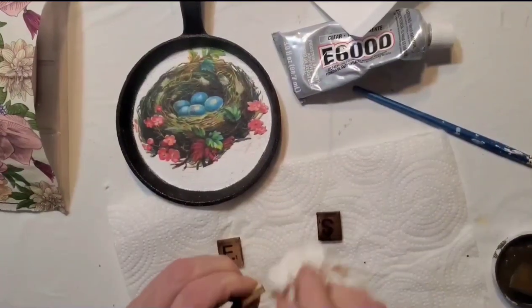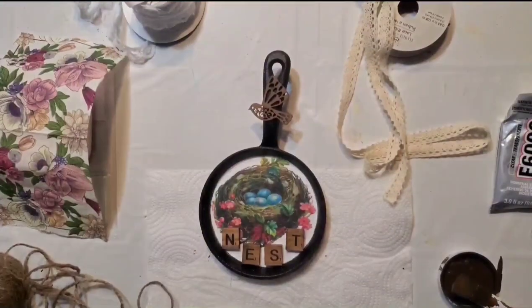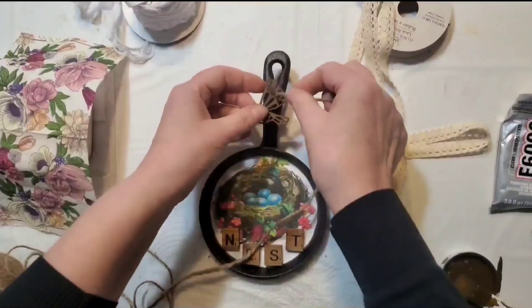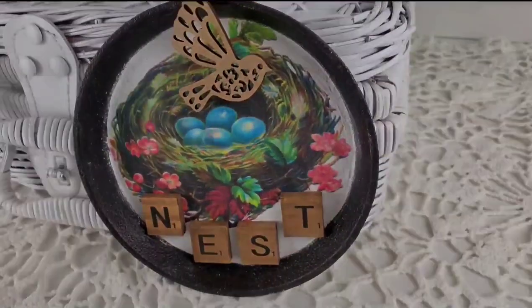I'm applying antique wax to some Scrabble letters that I picked up at the Dollar Tree, and I'm going to spell out the word nest. Add some jute twine and a little wooden bird that I also picked up from the Dollar Tree.